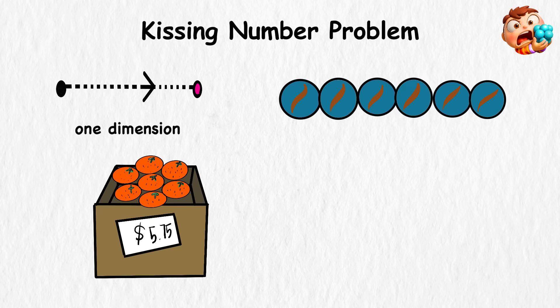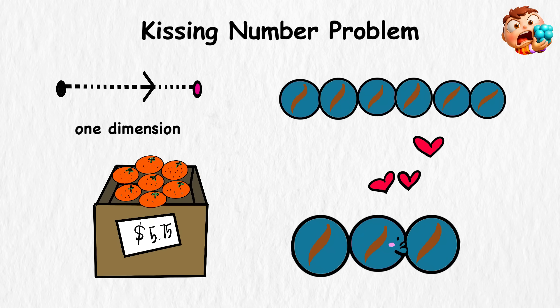In one dimension, the answer is easy. A line of marbles can only kiss two neighbors, one on each side.